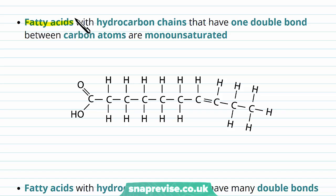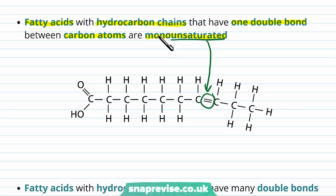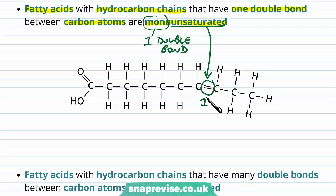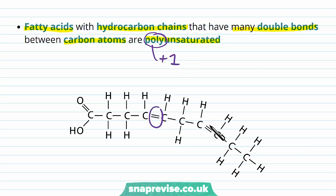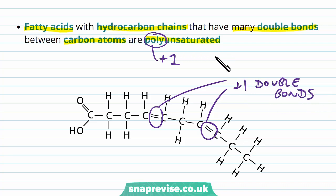Some fatty acids are slightly different. Their hydrocarbon chains have one double bond between two of the carbon atoms, and we call these monounsaturated. They're unsaturated because we now have a carbon-carbon double bond, and mono refers to the idea that there's one double bond. We can also have fatty acids with hydrocarbon chains that have many double bonds. If we have this between many carbon atoms, it's called polyunsaturated — poly referring to more than one. Anytime there are more than one double bonds, we call this a polyunsaturated fatty acid.